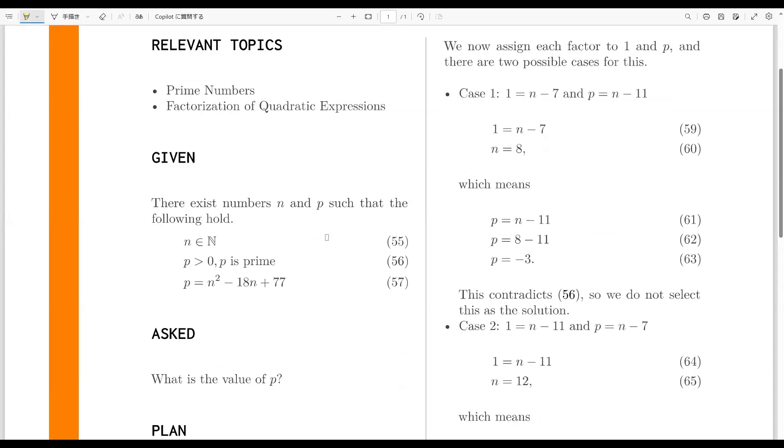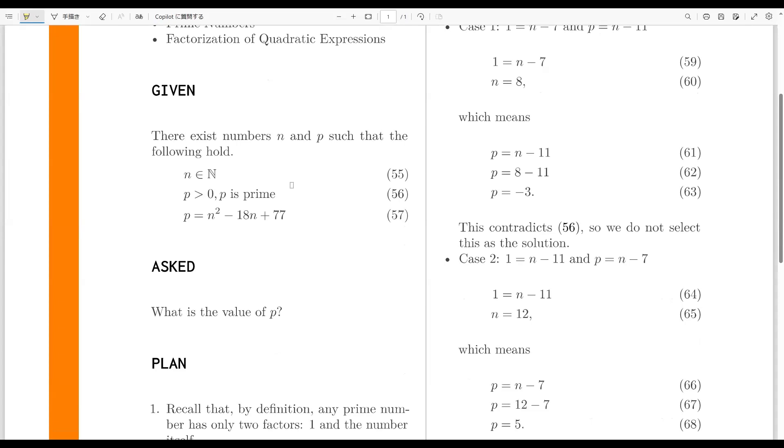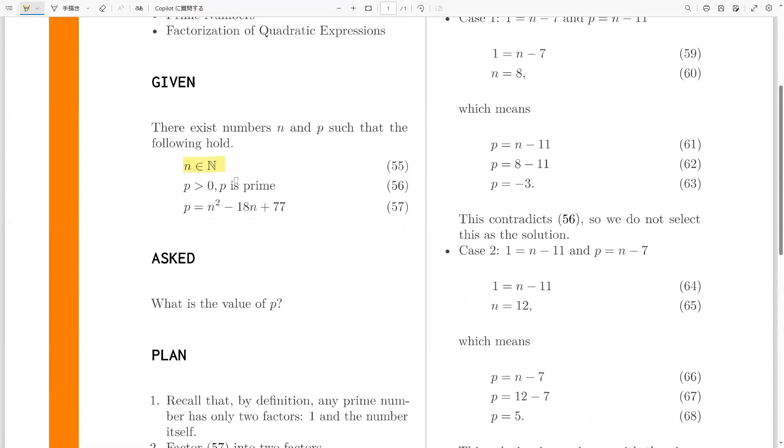Here I rephrase the given. It says that there exist numbers n and p such that the following hold. First, we are told that n is a natural number, so those are the numbers 1, 2, 3, 4, 5, and so on. Those are basically the positive integers.